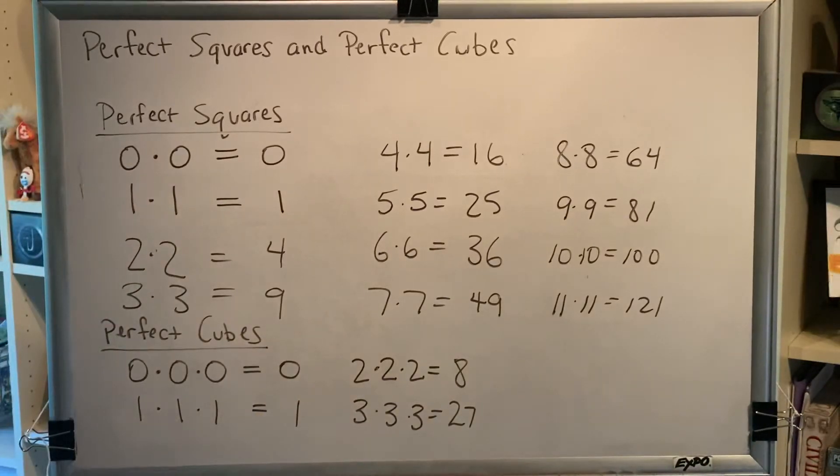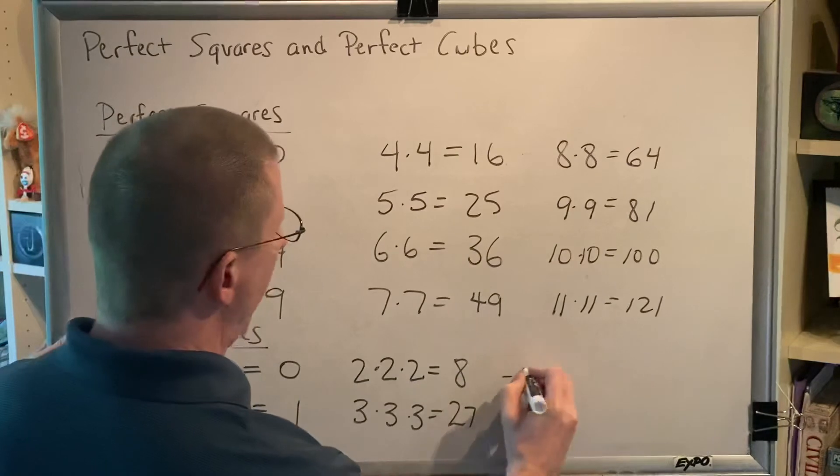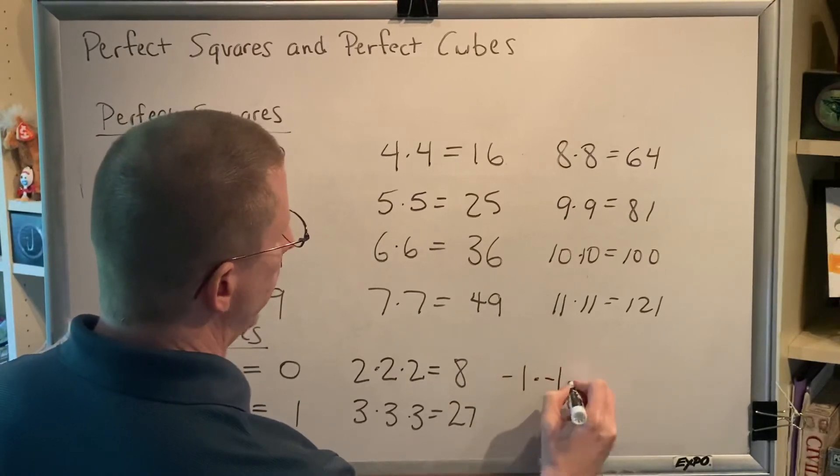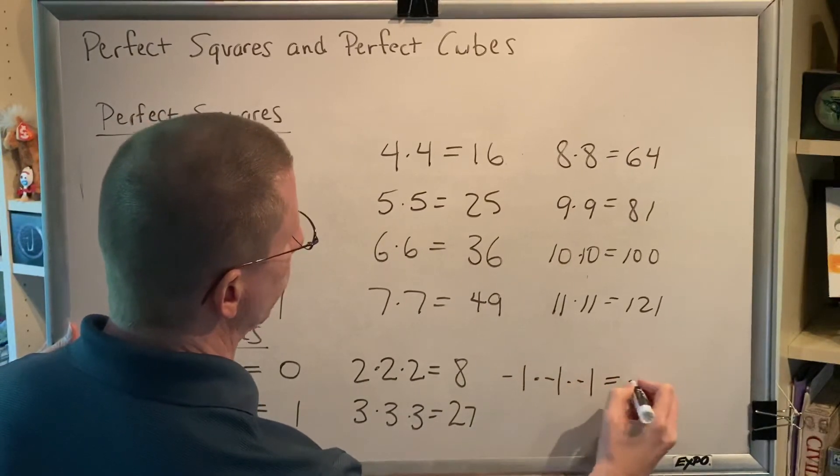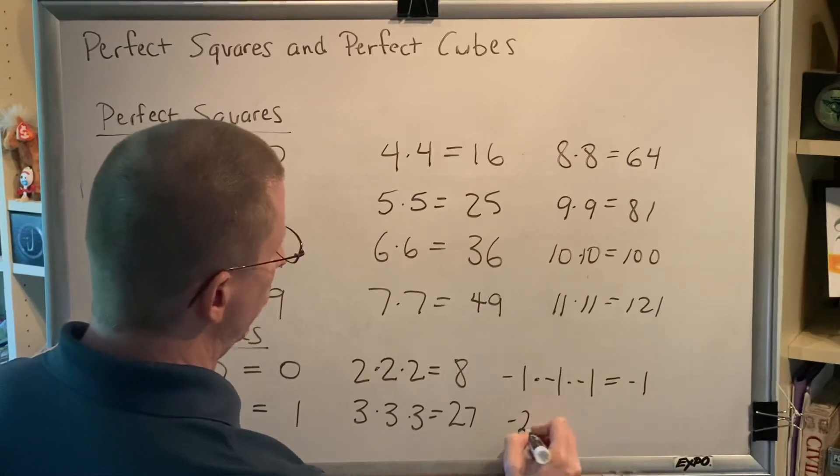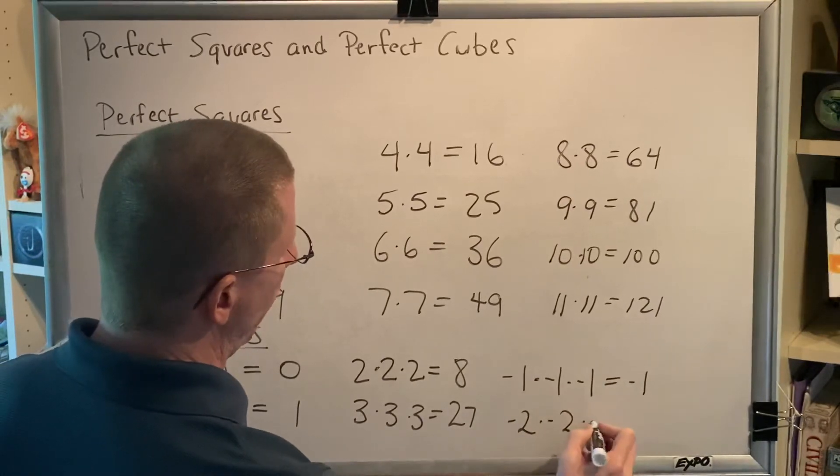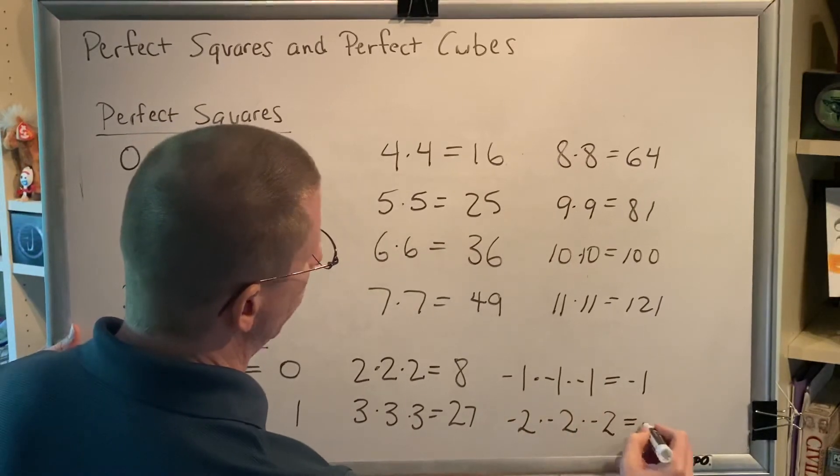We can even throw some negative numbers into the mix if we would like. Negative one times negative one times negative one equals negative one. Negative two times negative two times negative two equals negative eight.